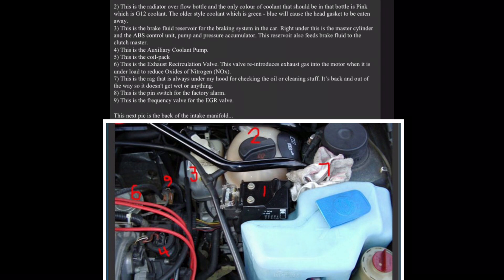Four, this is the auxiliary coolant pump. Five, this is the coil pack. Six, this is the exhaust recirculation valve. This valve reintroduces exhaust gas into the motor when it is under load to reduce oxides of nitrogen, NOx. Seven, this is the rack that is always under my hood for checking the oil or cleaning stuff. It's back and out of the way so it doesn't get wet or anything. Eight, this is switch for the factory alarm.